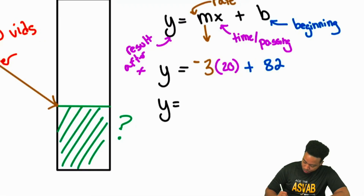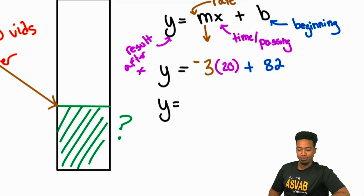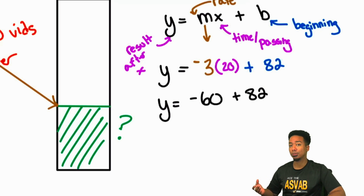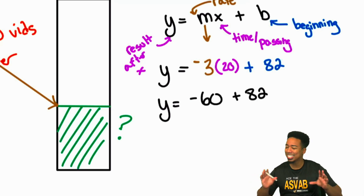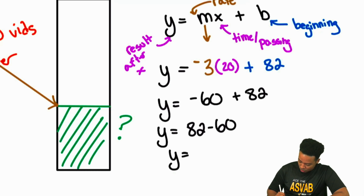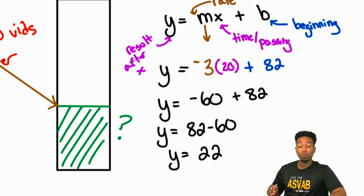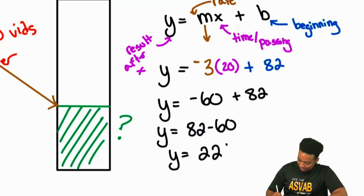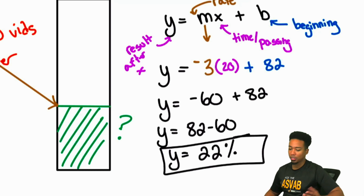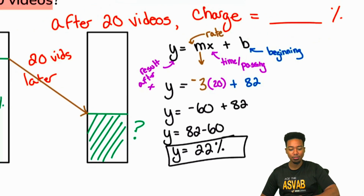What is negative 3 times 20? Negative 60. Plus 82 — and negative 60 plus 82 is the same as 82 minus 60. So y equals 82 minus 60, which gives us y equals 22. The resulting battery life left is 22 percent. After 20 videos, you'll have 22 percent charge remaining.